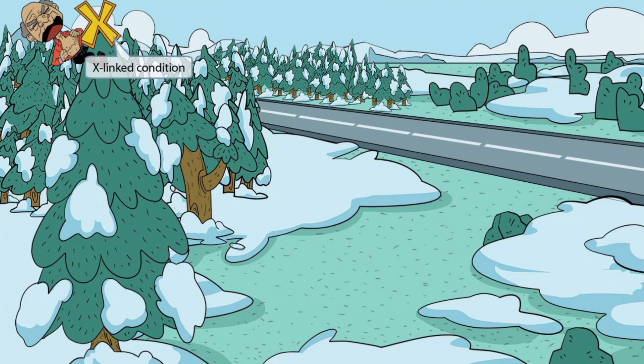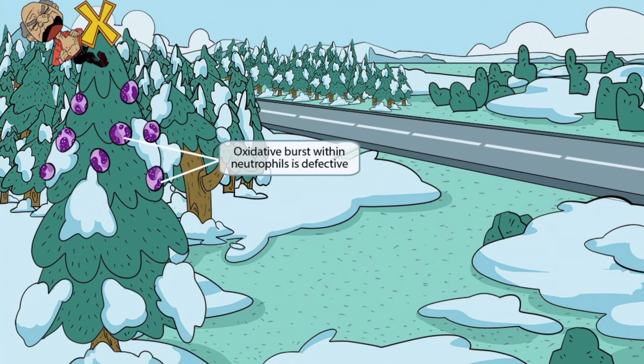Grandpa's goal was to place this Christmas X on the top of the tree, as goes the tradition of his family, although normally the Christmas tree is in their house when they add this ornament to the top. This X represents the fact that this is an X-linked condition. On his way up the tree, he has decorated the branches with these purple ornaments that have the characteristic shape of neutrophils. This is to help you remember that neutrophils are what perform the respiratory burst, which is defective in this condition.